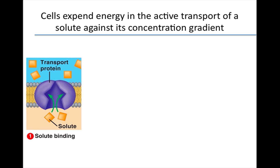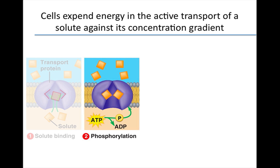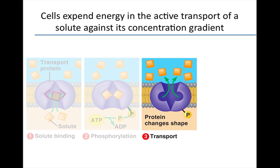In active transport, a cell must expend energy to move a solute against its concentration gradient — that is, across the membrane toward the side where the solute is more concentrated. The cell's energy molecule, ATP, supplies the energy for most active transport. The process begins when a solute on the cytoplasmic side of the plasma membrane attaches to a specific site on the transport protein. Then ATP transfers one of its phosphate groups to the transport protein. The phosphorylation causes the membrane protein to change its shape in such a way that the solute is released on the other side of the membrane.